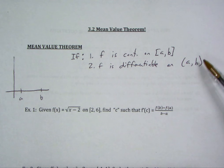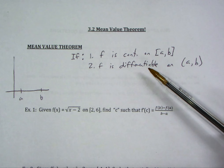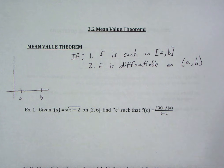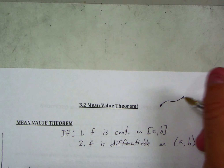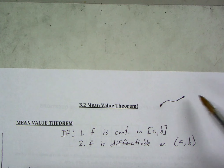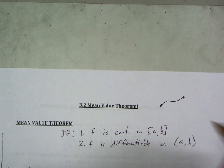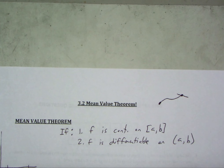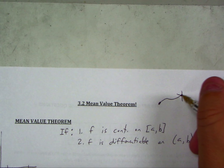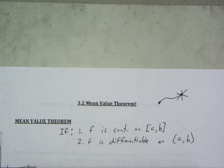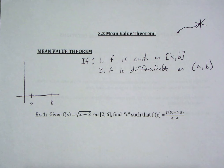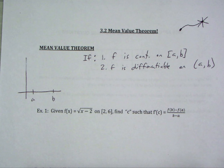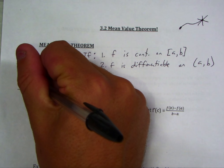We use the open interval because functions can't be differentiable at endpoints. A derivative is the slope of a tangent line, and if I had a curve continuous on the closed interval and tried to draw a tangent line at an endpoint, we don't know exactly what that looks like. So we always talk about differentiability on the open interval. Bottom line: we need a continuous and differentiable function — a nice smooth function.